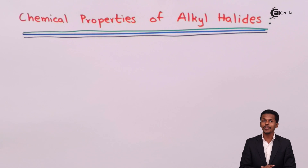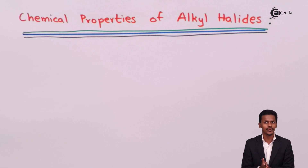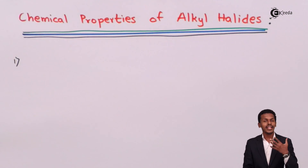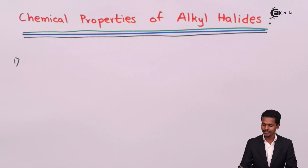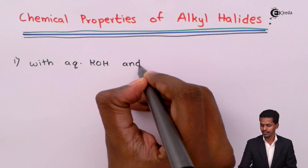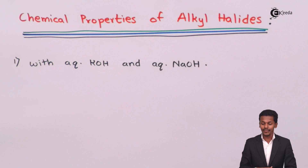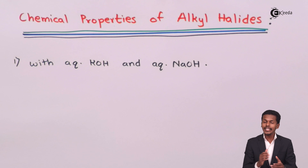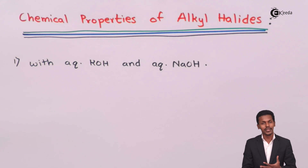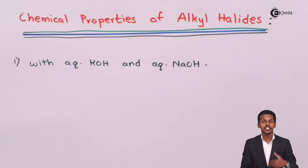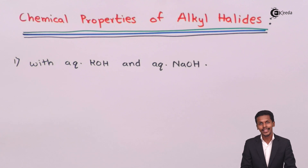Let us talk about the reactions exhibited by the alkyl halides. Starting with the first one: the reaction of alkyl halide with aqueous KOH or NaOH solution. Whenever an alkyl halide is reacted with aqueous KOH or aqueous NaOH solution, a substitution reaction takes place and we obtain an alcohol.